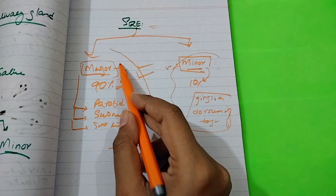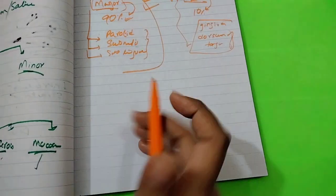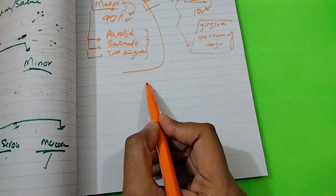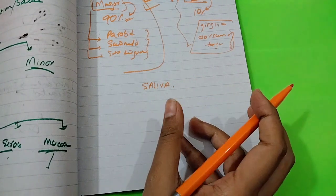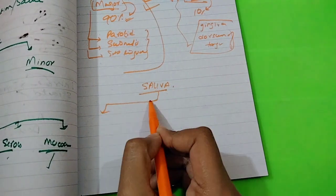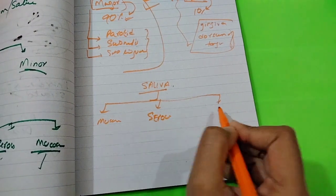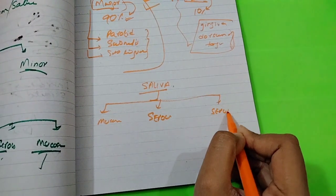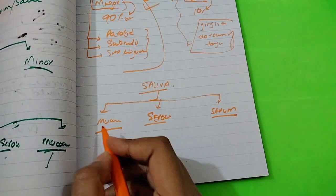We need to cover this, but before that, the other classification is based on the nature of saliva. The saliva that is secreted can be mucous, serous, or seromucous.